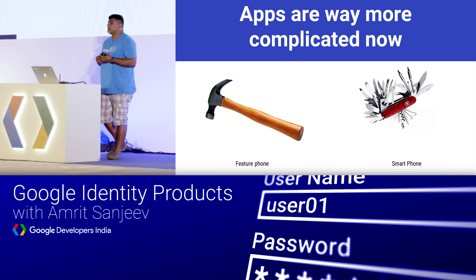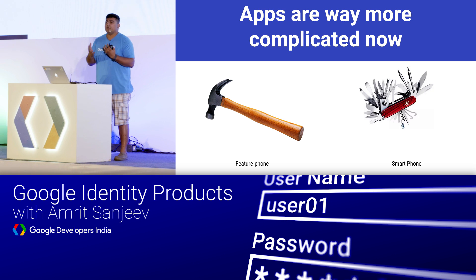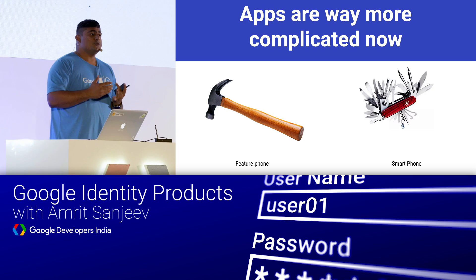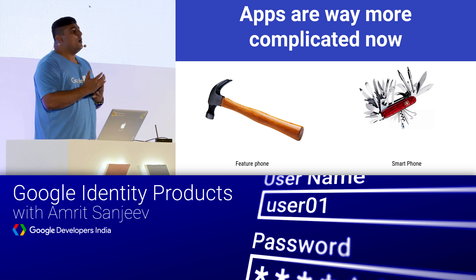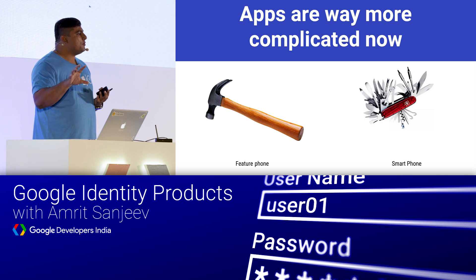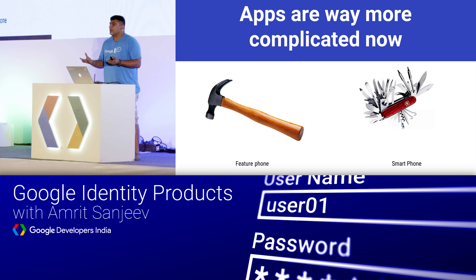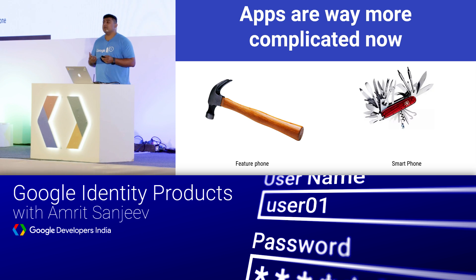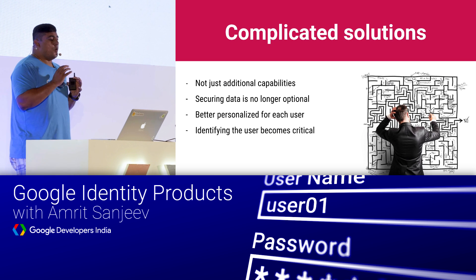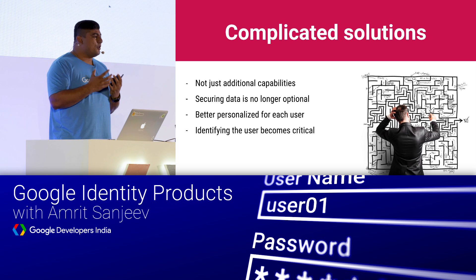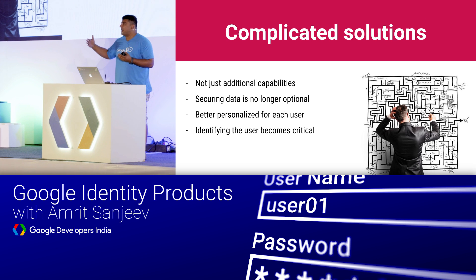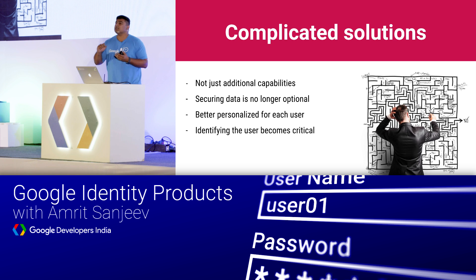Why would we need these identity solutions? Basically because apps are now more complicated. If you take apps from five years ago to today, most of them have identity, personalization, bank accounts, social profiles, card payment options — all things that you need to protect with security. So the need for having security and using identity solutions is more and more prevalent. You also have a lot of apps building personalization and experience around identity, which users love as a plus point of your app.